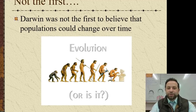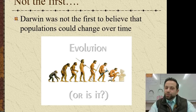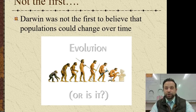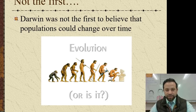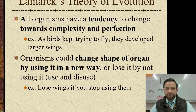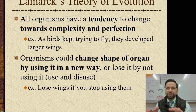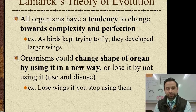Darwin was not the first person to believe that populations can actually change over time, even though we know Darwin as the father of evolution. Lamarck was actually the first guy that came up with the theory of evolution, and his theory was that all organisms have this tendency to always move towards perfection or to evolve towards perfection.